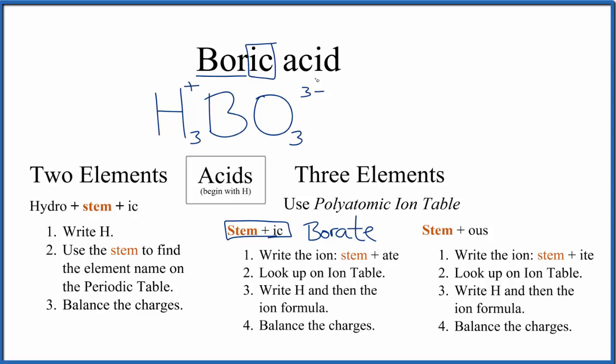To recap: we put H in front because it's an acid. We saw that we didn't have 'hydro', so it's got to be three elements. We looked at the stem with 'ic', so we used this '-ate' ending. We looked up the borate ion on the list of polyatomic ions, balanced the charge, and got our formula. This is Dr. B with the formula for boric acid.